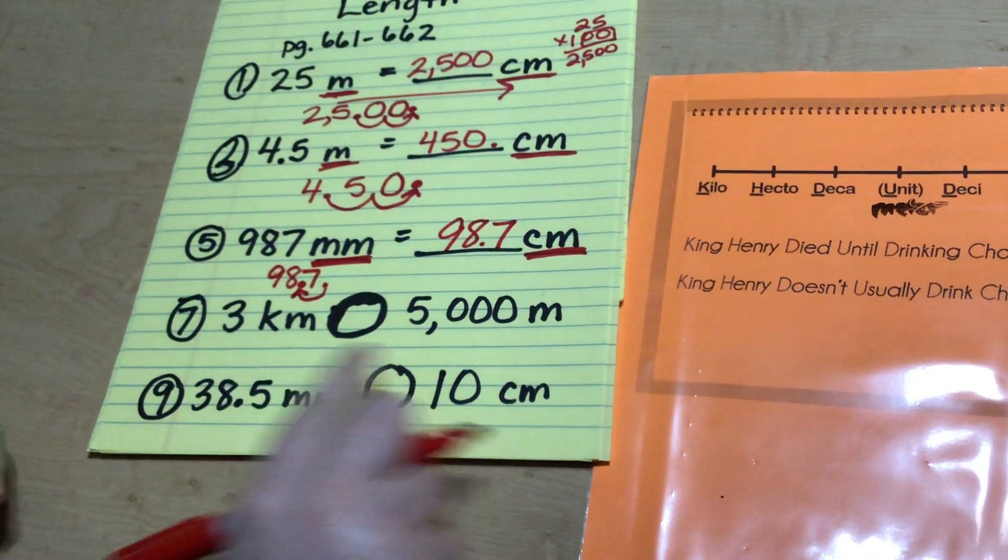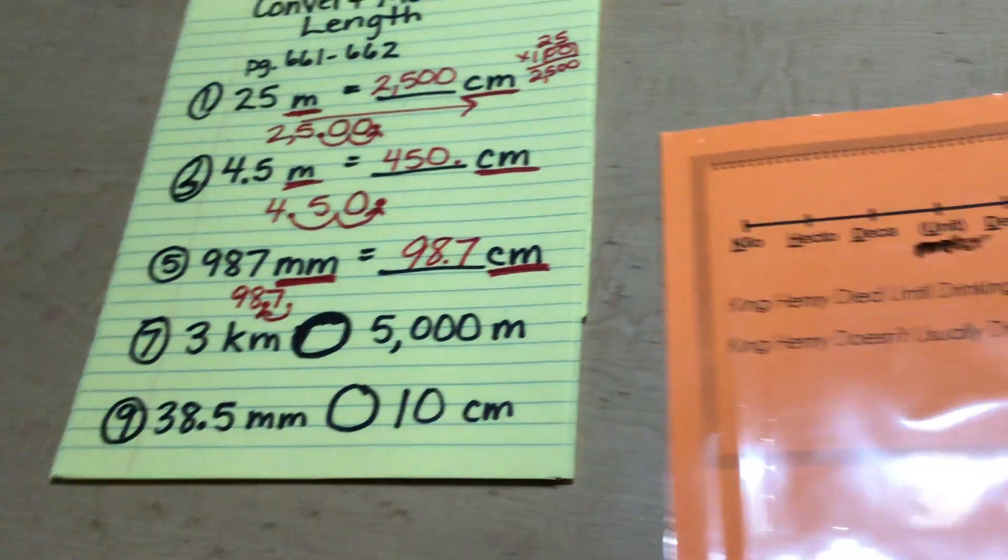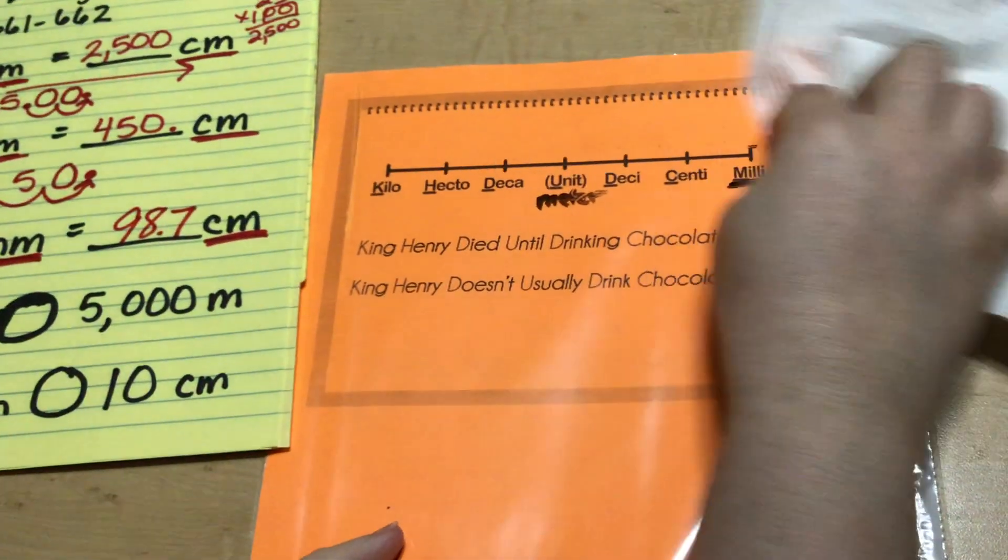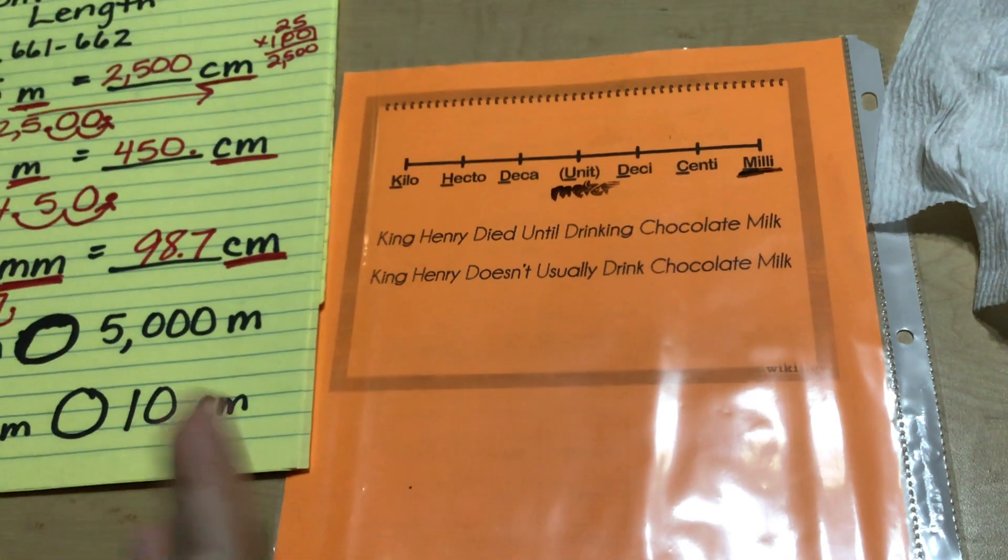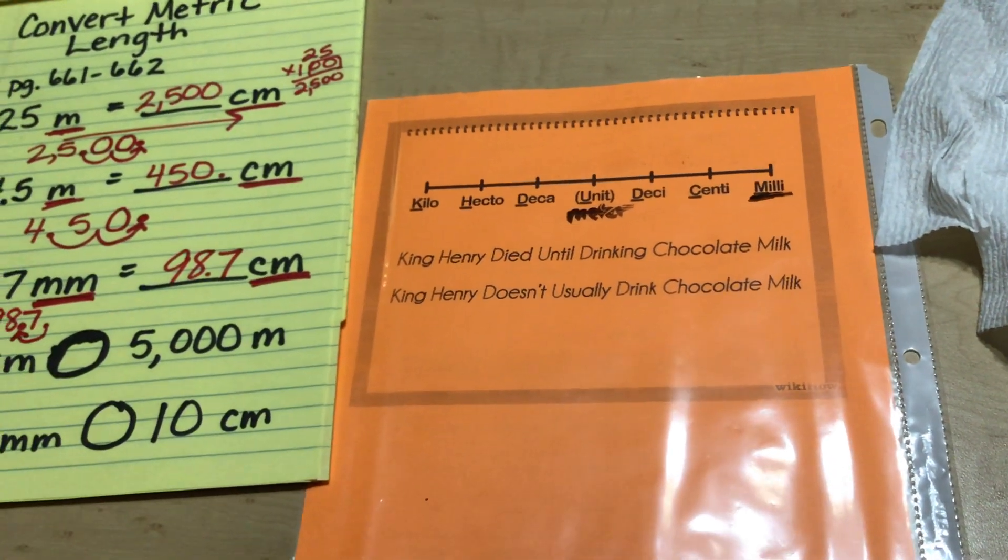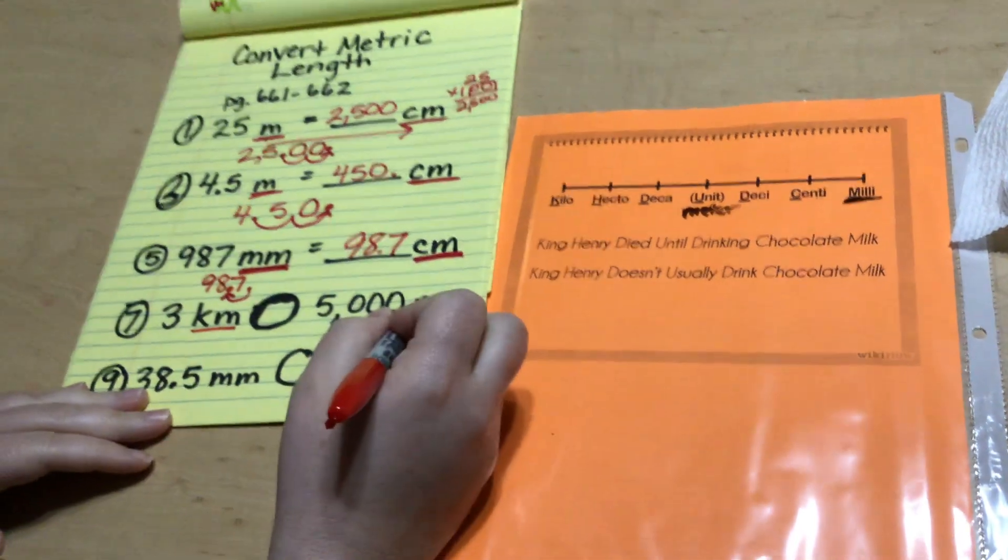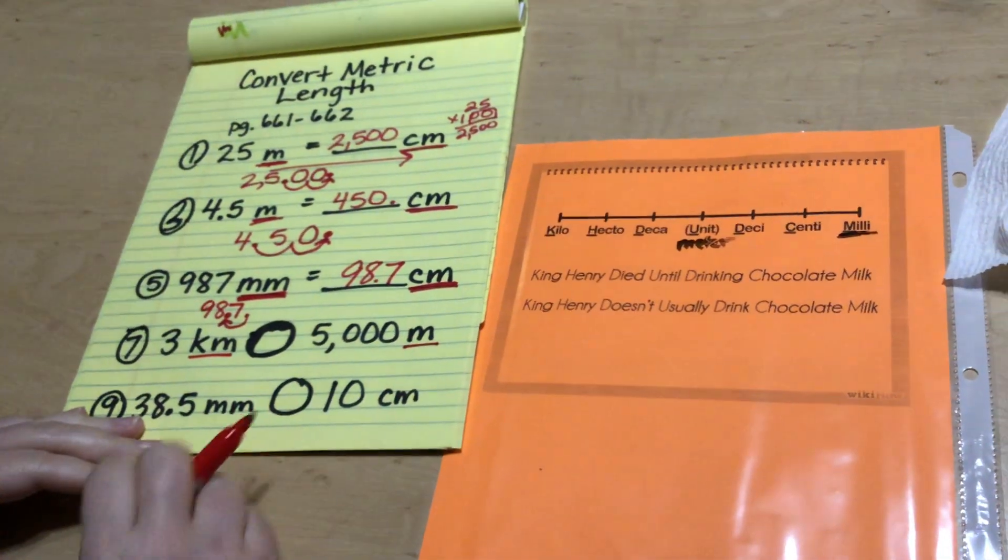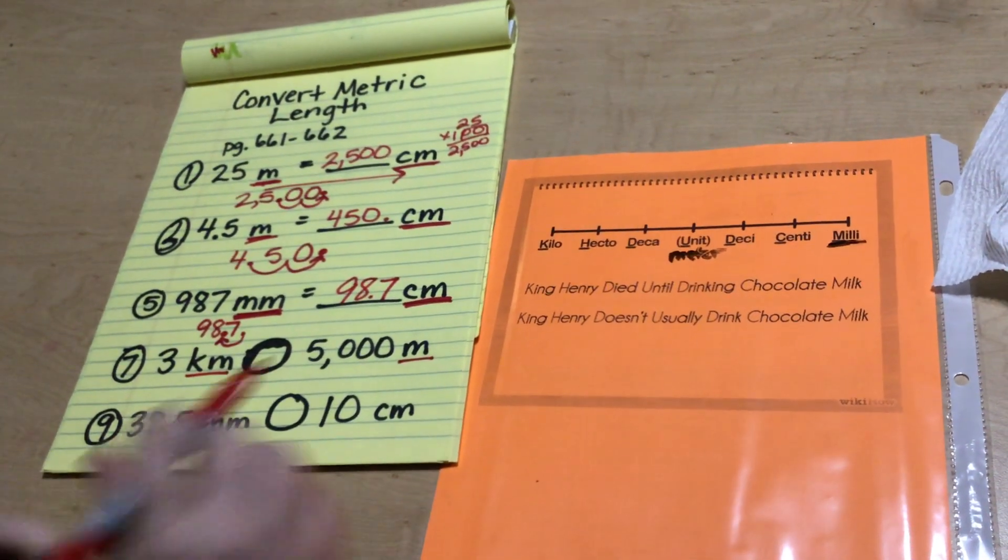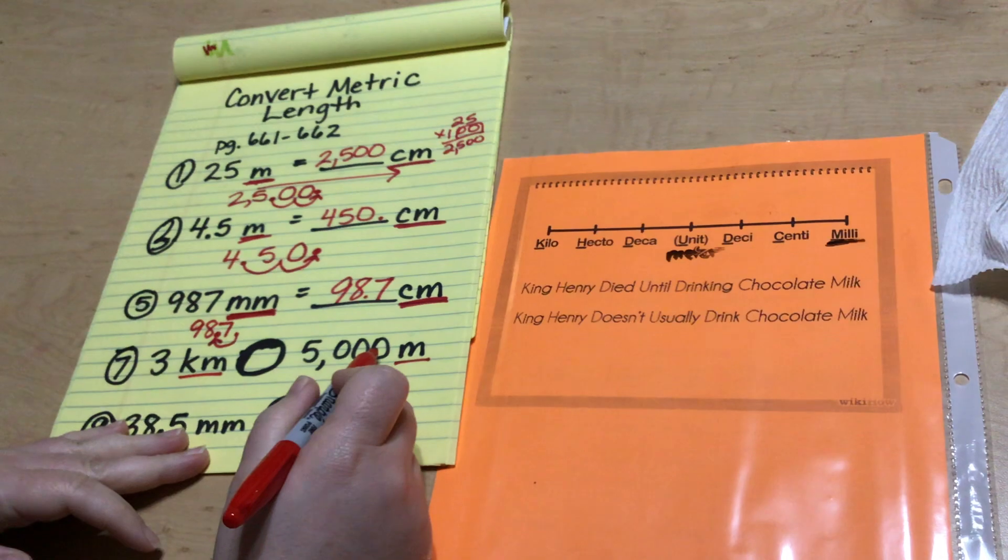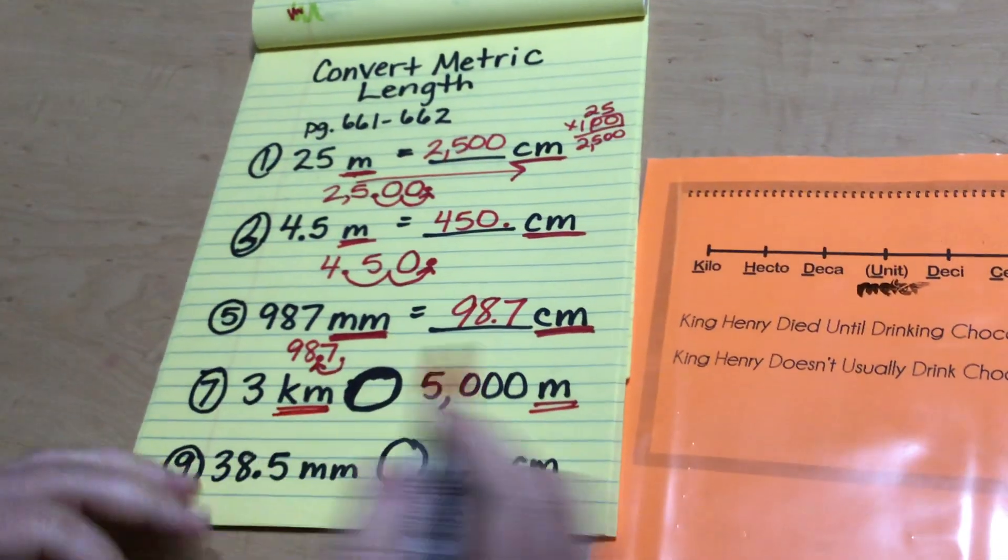The next couple were actually comparing problems. So let's take a look at those. When we're comparing two numbers, kind of like fractions, you have to have common denominators. Well, when you're comparing two measures, you have to have common units. So we have kilometers and meters. We just need to change one of them. It's up to you which one you want to change. I see all kind of zeros over here. So I think I'm gonna change meters into kilometers. So meters to kilometers.